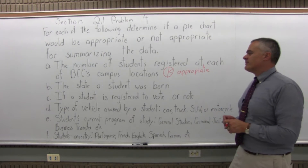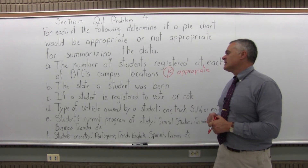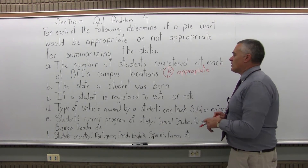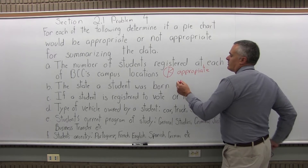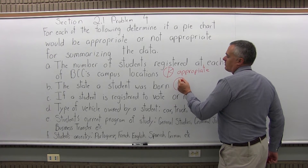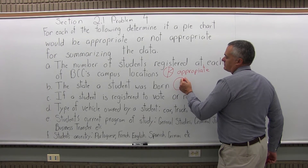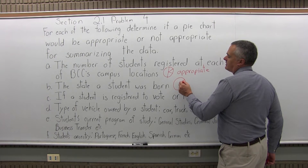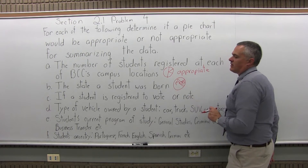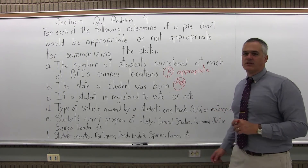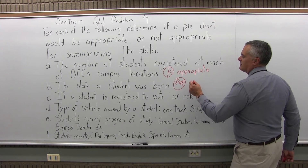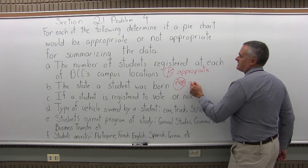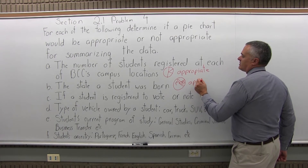The next one: the state a student was born. That would make a decent pie chart too. A big chunk of it would be Massachusetts and then the next biggest would be Rhode Island. The others would be split up, and a lot of states you wouldn't have any students from. So that would also be appropriate.